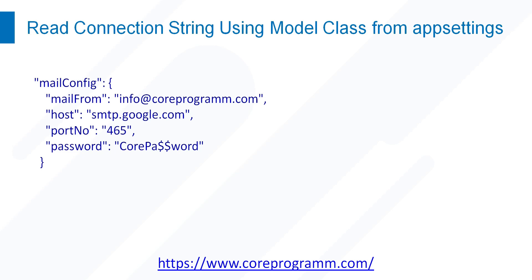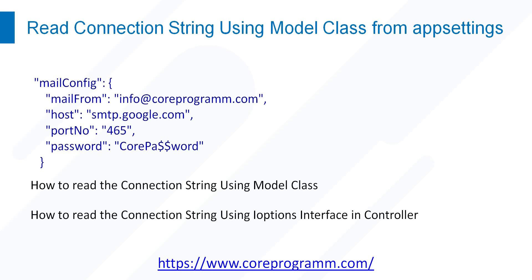To get rid of this, we use two processes where you can read the data at a time. In this example, we will see how to read the connection string using a model class and then how to read the connection string using the IOptions interface in a controller — what is IOptions interface and what is its use in ASP.NET Core. We will elaborate on that a bit. So let's create an ASP.NET Core web application and see how the two processes work.